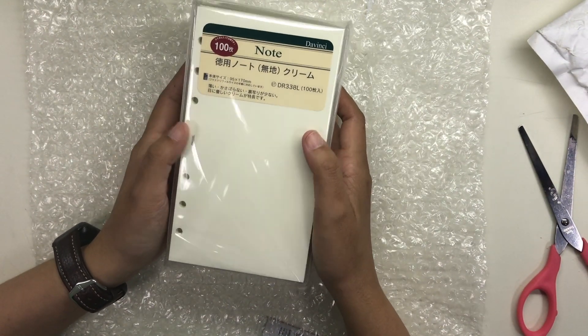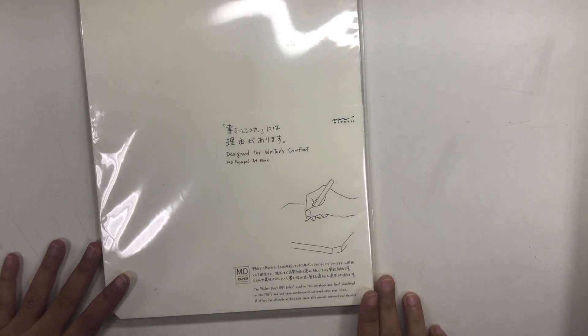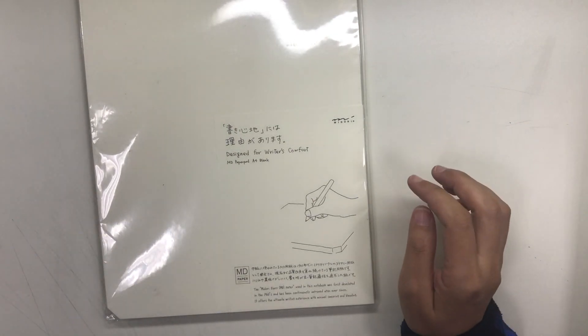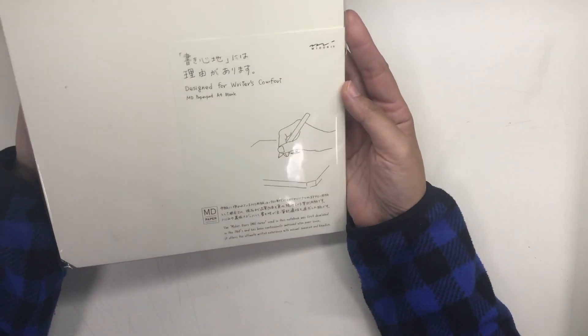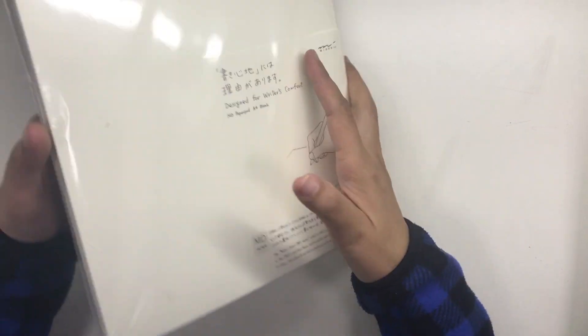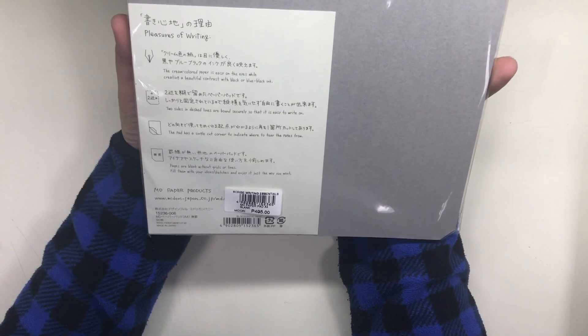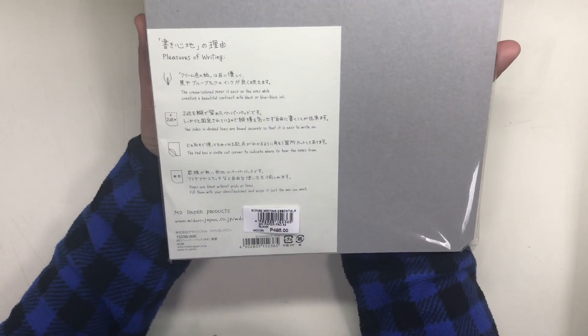So I looked for the Midori MD paper pad in A4 size and I found one in Scribe as a Megamall branch. I had to call a few Scribe branches to find which one had this. This costs 495 pesos and it has 90 A4 sized sheets.